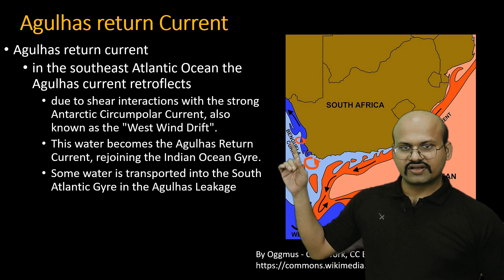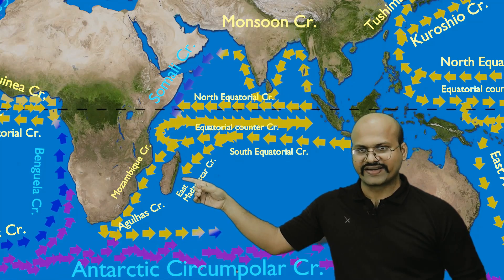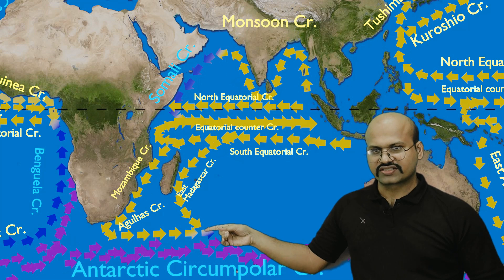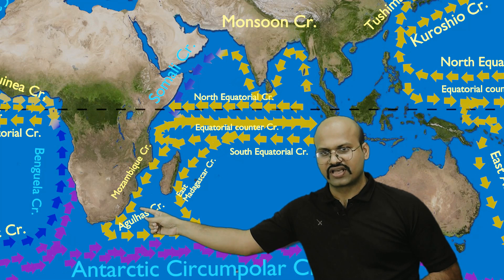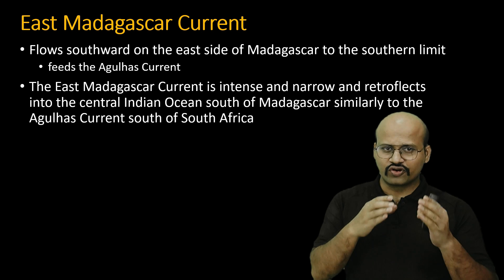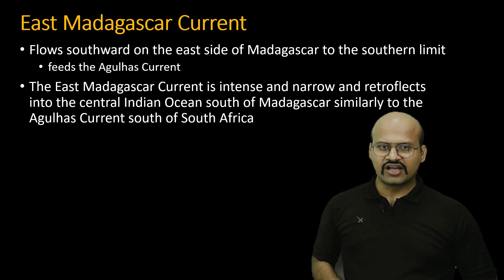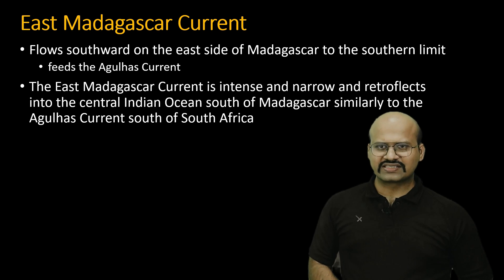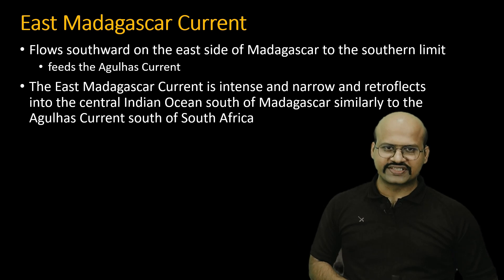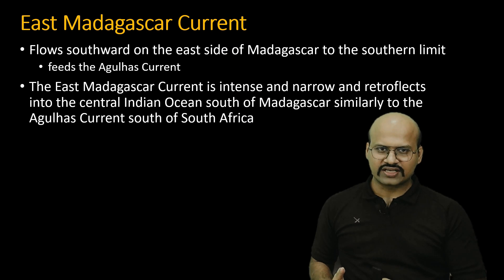Another branch of the south equatorial current flows along the eastern boundary of Madagascar island and is called the East Madagascar current. It is also a warm ocean current that meets the Agulhas current, supplying some water to it. Just as the Agulhas current is turned back by the Westerlies, the East Madagascar current is also turned slightly back and joins the Agulhas return current.